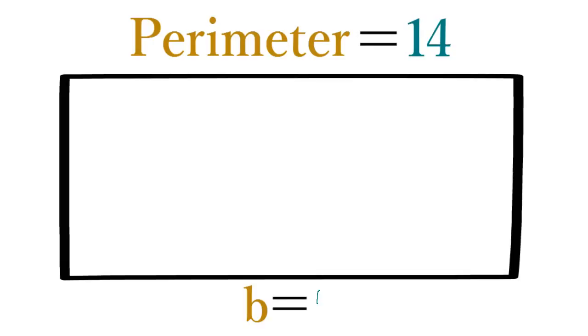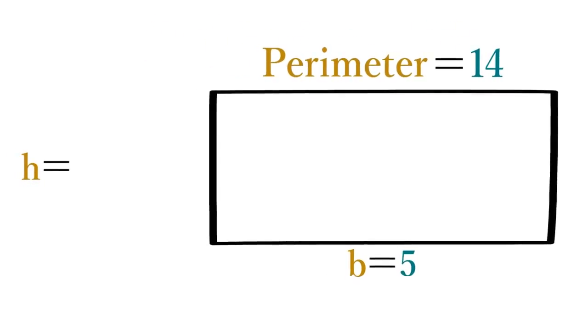And finally, when you know the perimeter and one side of a rectangle, to find the other side, divide the perimeter by 2 and subtract. For example, this rectangle has a perimeter of 14 and a base of 5. To find its height, divide 14 by 2, which equals 7.